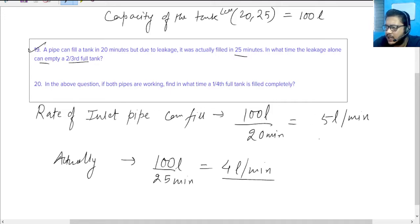Now you see, my capacity was with the inlet 5 liters per minute. If I can draw a diagram, my capacity was 5 liters per minute, but now my capacity has reduced to 4 liters per minute, which means the rate of the outlet is 1 liter per minute.